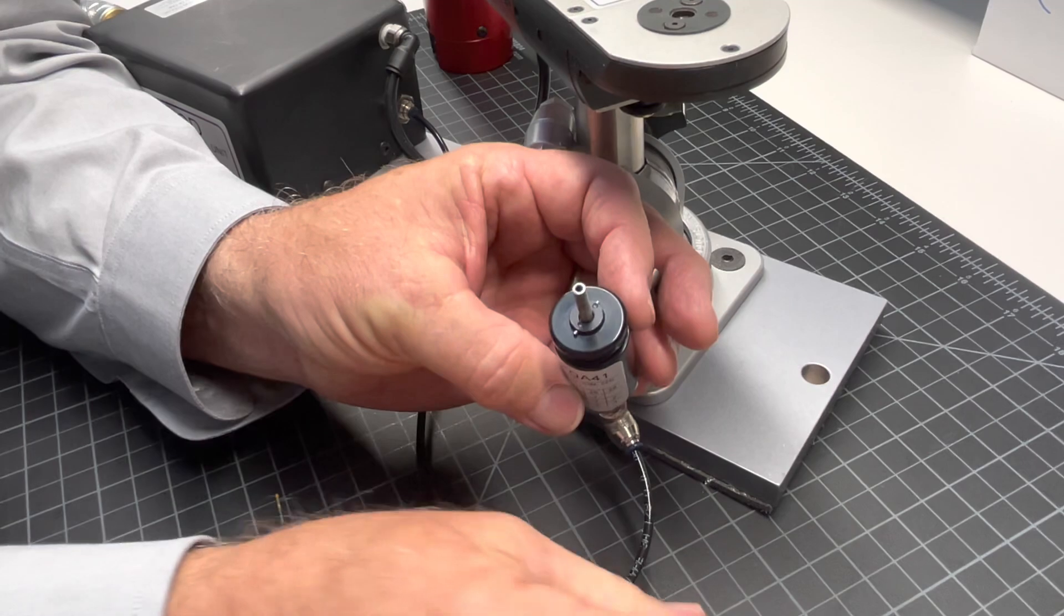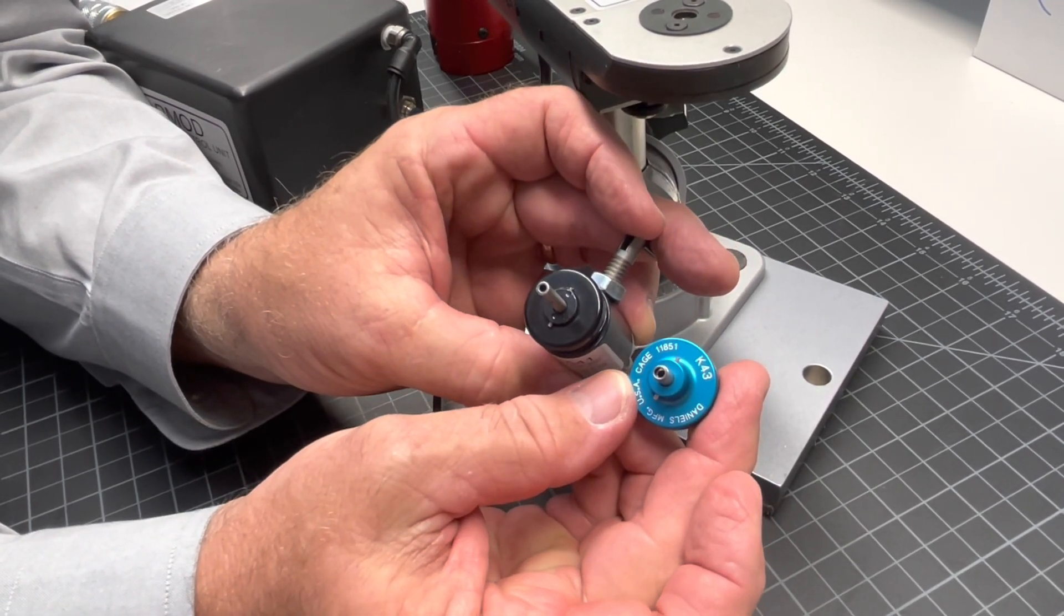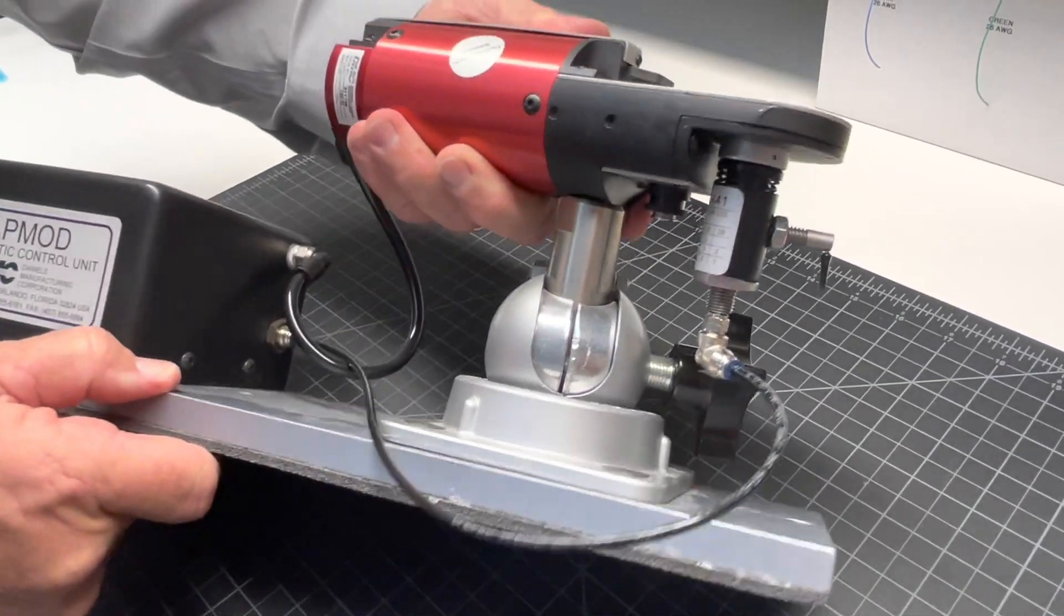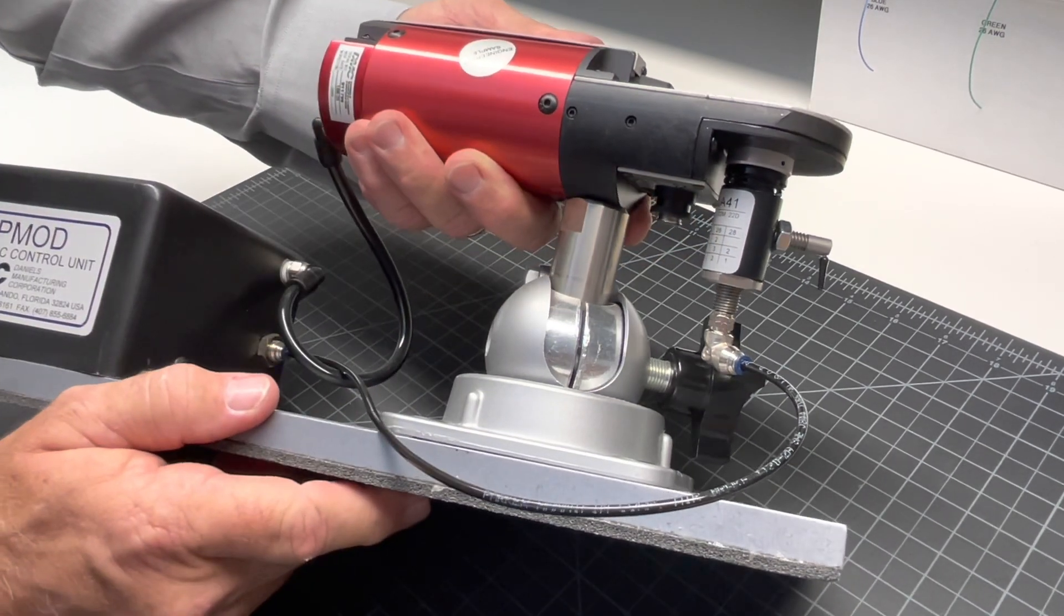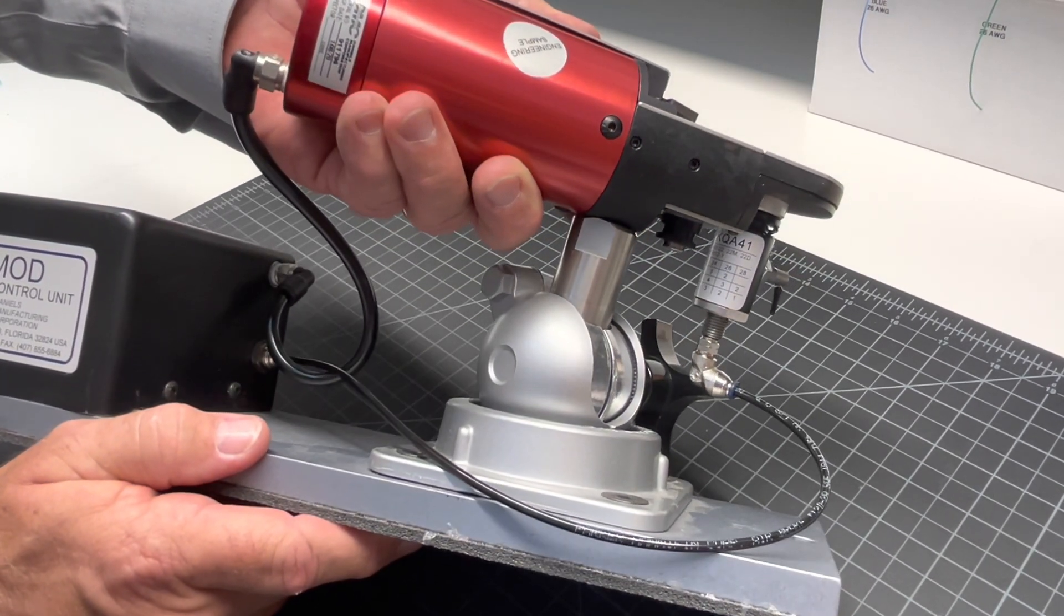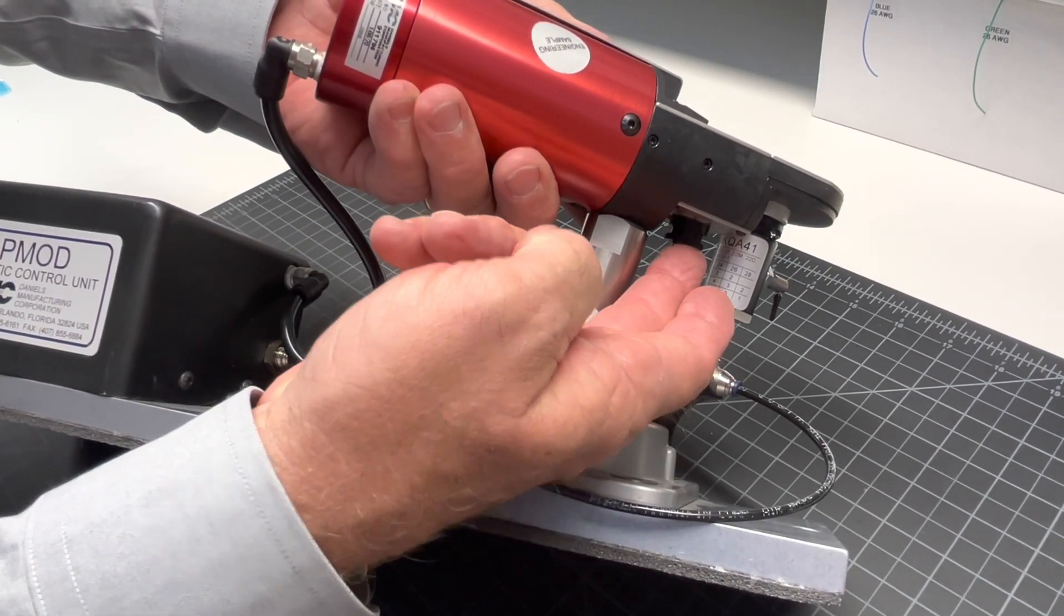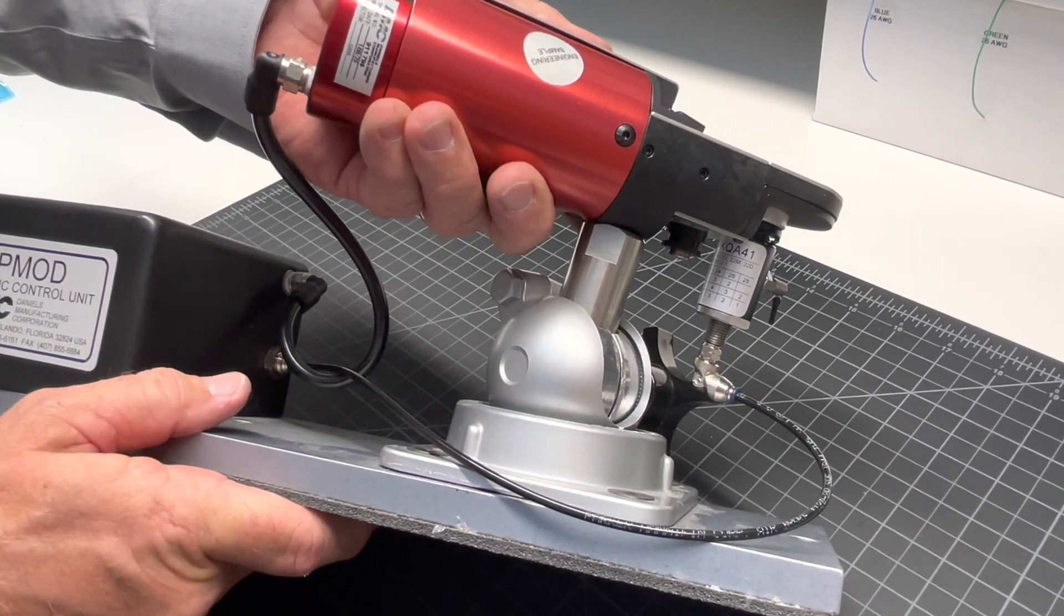They both have bayonet pins and so therefore they install onto the tool the same way. When using the AP mod system, the selector setting will remain the same and the settings will be identical to what you have on your crimp tool and your hand positioner. Make sure you set the selector knob to the proper setting, matching your contact and wire size.